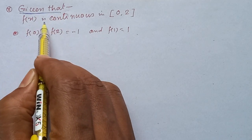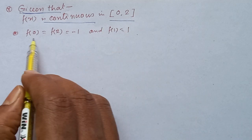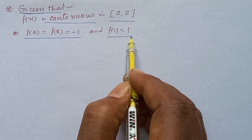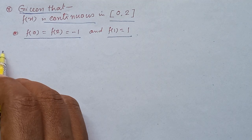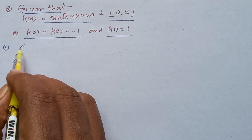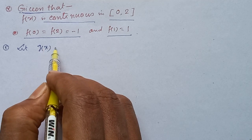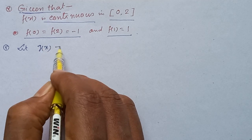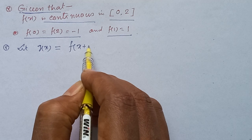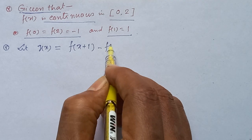We are given f(0) = f(2) = -1 and f(1) = 1. For statement 1, let us construct g(x) = f(x+1) - f(x). We need to check this on the interval [0, 1].